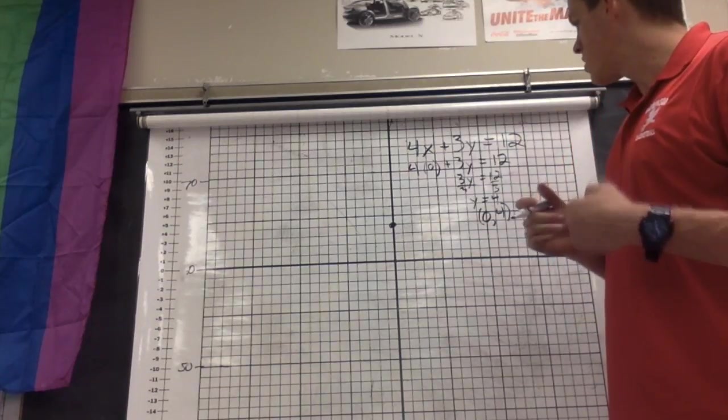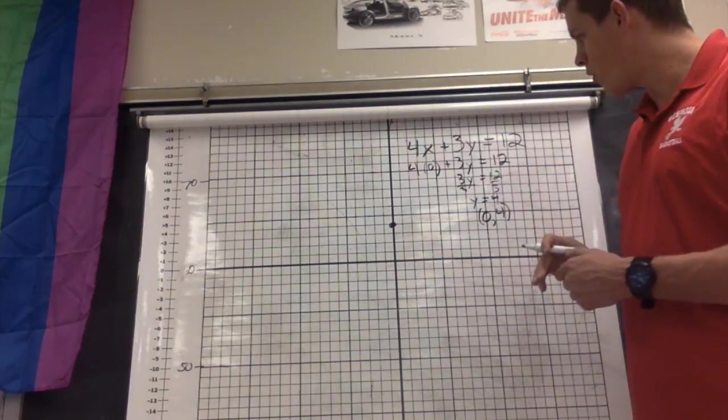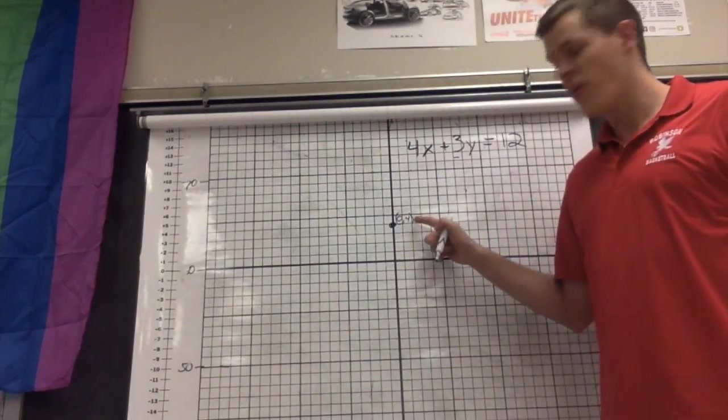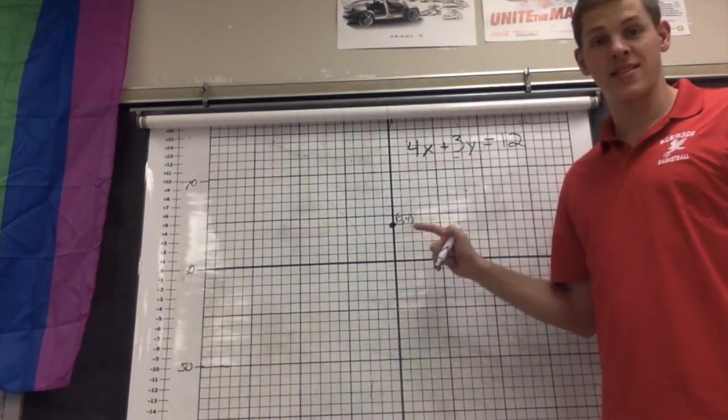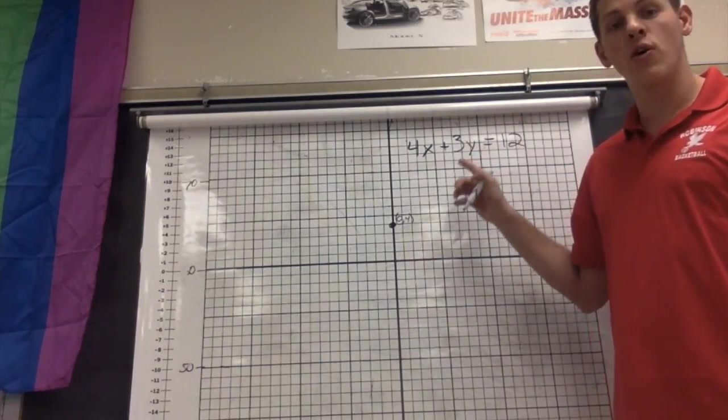Let's see, so next I want to try out another one. So now that I have this 0, 4, I'm going to test out another one. This one, I'm thinking let's try putting in a 0 for y.